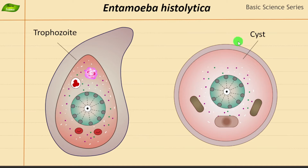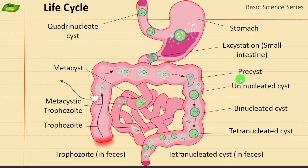This is the trophozoite and this is the cyst form. The cyst is not going to cause damage because it is the inactive form — it helps Entamoeba histolytica survive in the environment. The trophozoite is the active form inside the host. I have explained all these in my previous videos, including the life cycle of Entamoeba histolytica in detail.